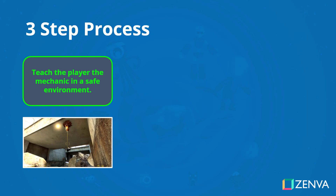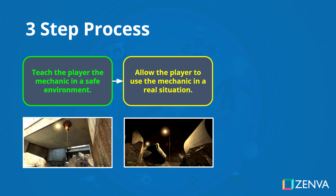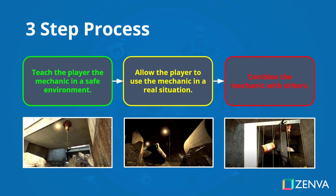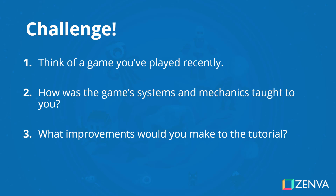So, the three-step process again: first, teach the player the mechanic in a safe environment; then allow the player to use the mechanic in a real situation; and then combine the mechanic with others, further reinforcing the emergent systems of your game. As a bit of a challenge, I want you to think of a game you've played recently and think to yourself: how were the game's systems and mechanics taught to you?